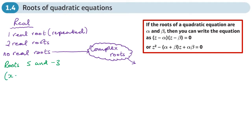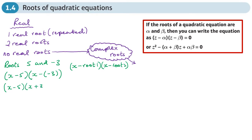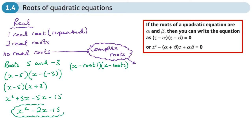Those roots came from the brackets — always like this. You can think of it as (x minus root 1) times (x minus root 2). If the root is negative, you end up putting a plus. So it's (x minus 5)(x plus 3), and expanding gives x² + 3x - 5x - 15, so the quadratic is x² - 2x - 15.